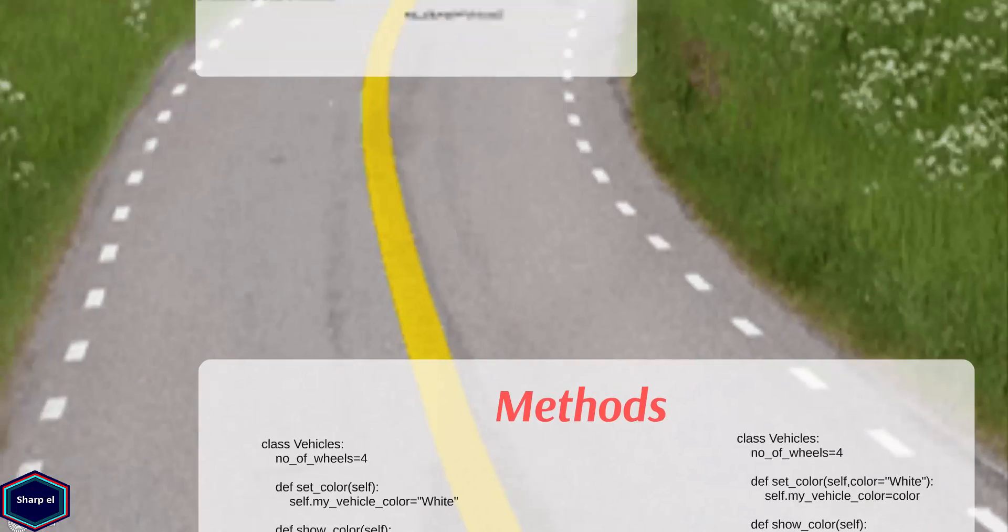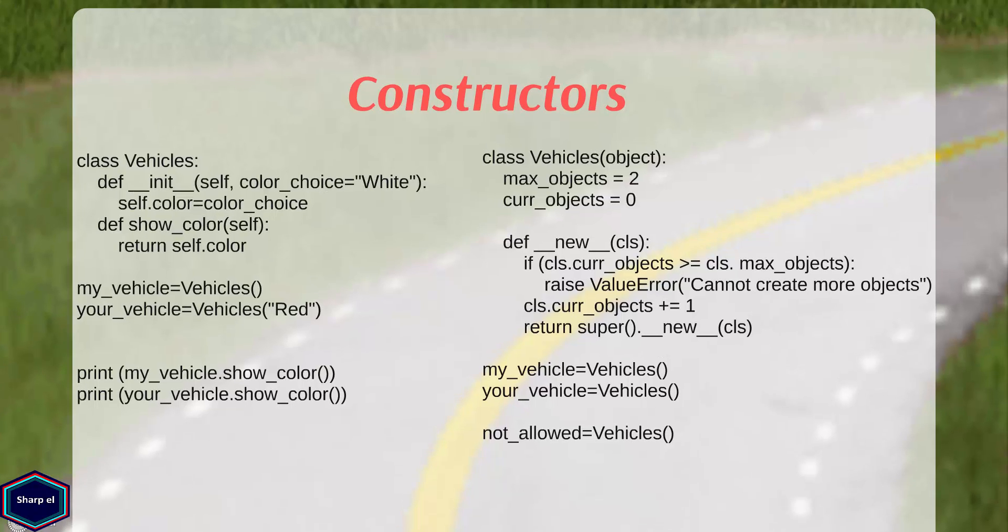Now let's move to constructors. We all know that each vehicle has a color. It would be great if we could give the color of a vehicle every time we create a new object. In last example, we used the method setColor to set the color of a vehicle. Now using constructors we can do the same.